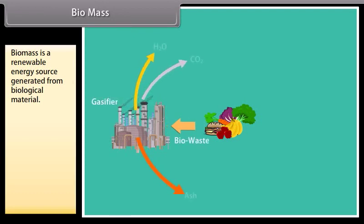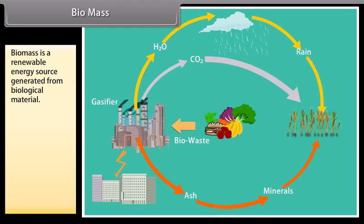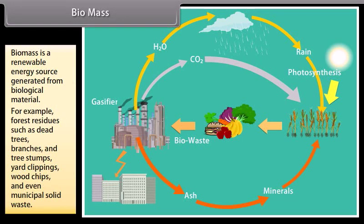Biomass. Biomass is a renewable energy source generated from biological material that is derived from living or recently living organisms. As an energy source, it is either used directly or converted into other energy products such as biofuel. For example, forest residues such as dead trees, branches, and tree stumps, yard clippings, wood chips, and even municipal solid waste. Biomass also includes plant or animal matter that can be converted into fibers or other industrial chemicals.